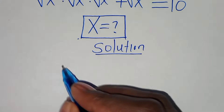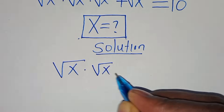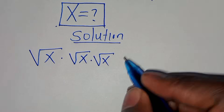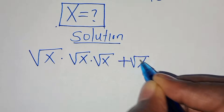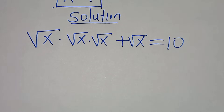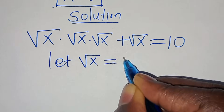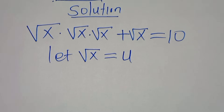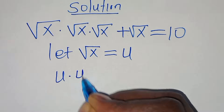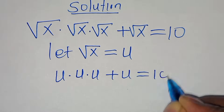We have the square root of x multiplied by square root of x multiplied by square root of x, plus square root of x, equals 10. We can let square root of x be equal to u, so that now we have u times u times u plus u, equals 10.